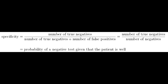Specificity is the true negative rate — the proportion of all people without disease who test negative, or the probability that the test indicates non-disease when disease is absent. In the 2x2 table this is the TN portion, where the test shows negative and the person does not have disease.